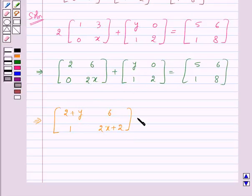So this will be equal to a 2 by 2 matrix with elements 5, 6, 1, 8. Now if two matrices are equal then their corresponding elements will be equal. So here this implies that 2 plus y will be equal to 5, 6 is equal to 6, 1 is equal to 1 which is very clear and 2x plus 2 will be equal to 8.